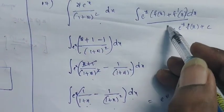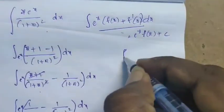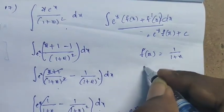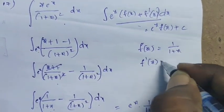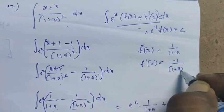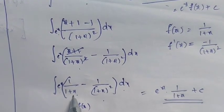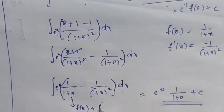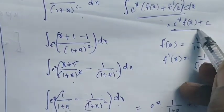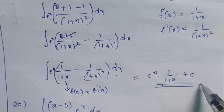According to the formula, f(x) = 1/(1 + x), and differentiating gives f'(x) = −1/(1 + x)². So it is in the form e^x · [f(x) + f'(x)]. The answer is e^x · [1/(1 + x)] + constant.